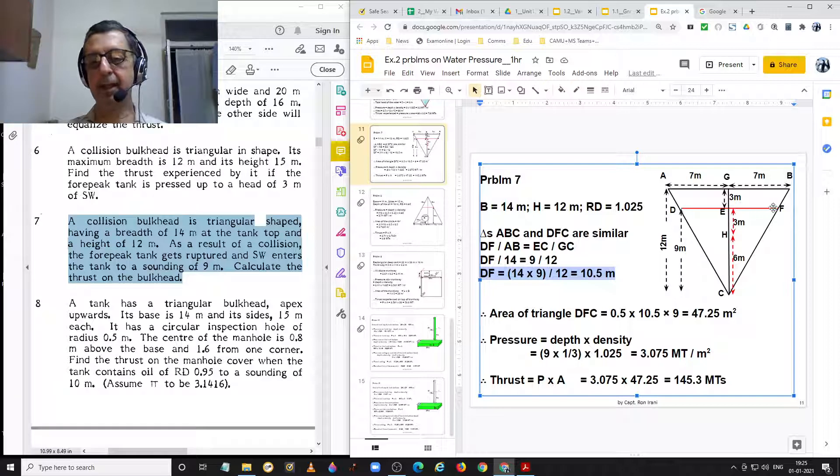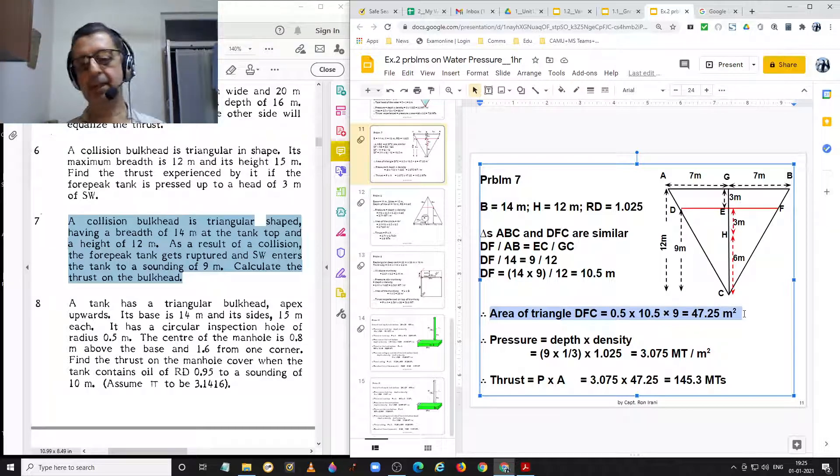And area of the triangle DFC is equal to half base into height. That is half base is 10.5, height is 9, giving us the area of the triangle equal to 47.25 square meters.